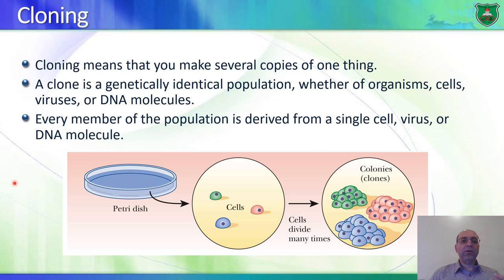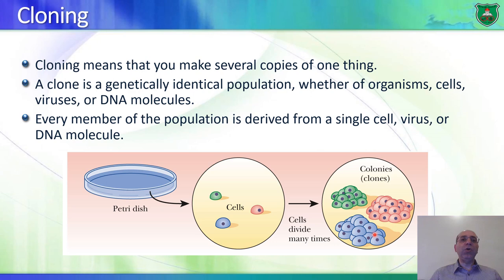Cloning means making copies of something. Starting with one bacterial cell, it can grow into multiple cells — a clone of cells originating from one single cell. If we say human cloning, it means making copies of the same human individual with the same exact genetic background. All of these cells would have the same exact DNA as the original one.